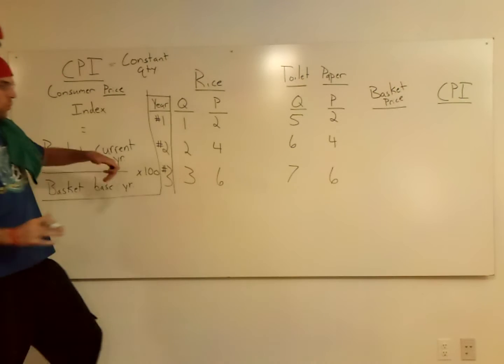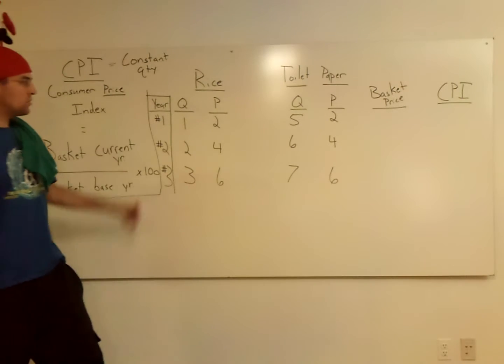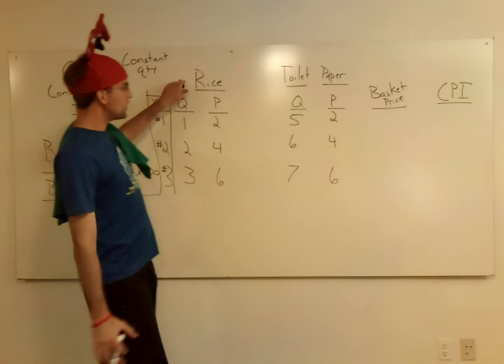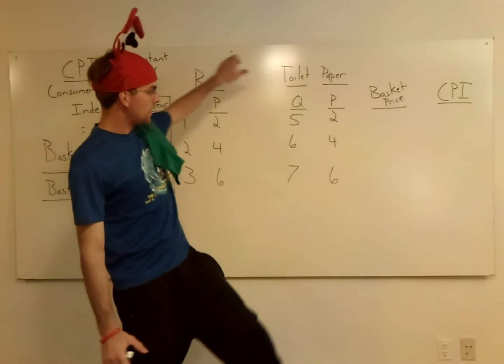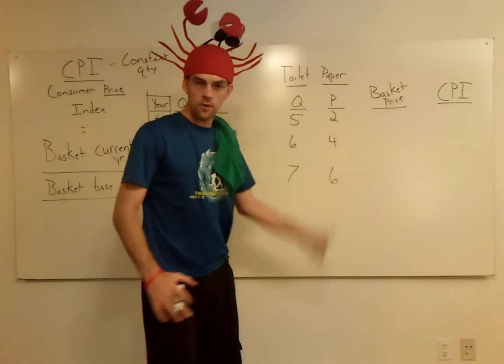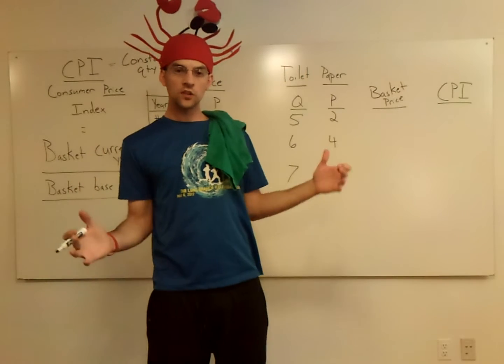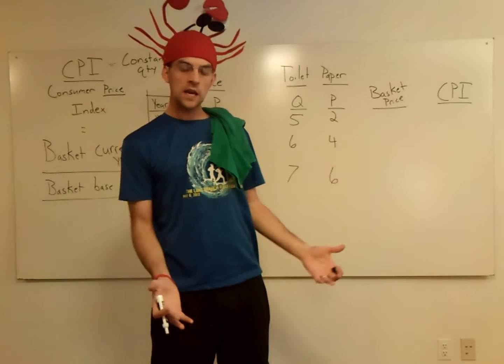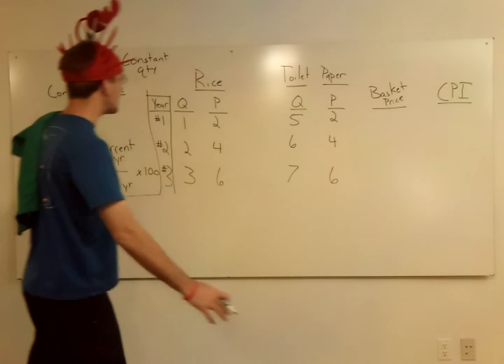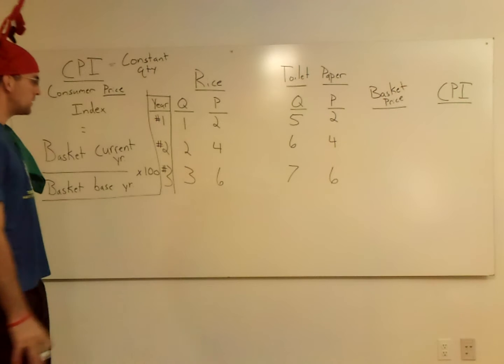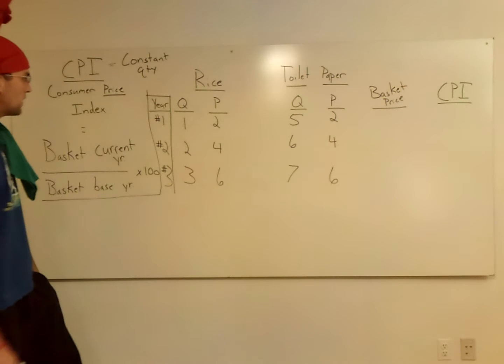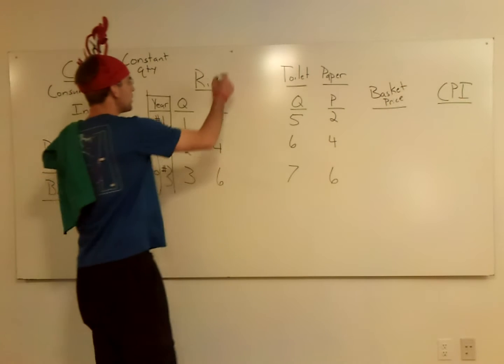So when we want to know what's happening to the price, we need a constant quantity. Well, what quantity are we going to use? We have two goods here: rice and toilet paper. What is going to be the quantity we use?